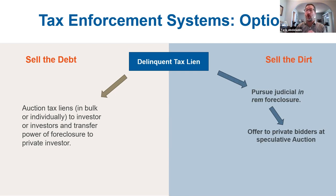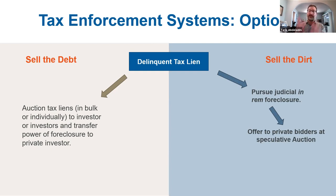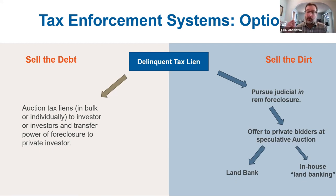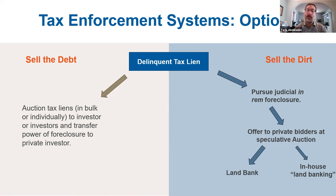The other option is for the government to hold that debt for two to three years and then pursue a judicial in rem foreclosure action through the court. They then either take title or send the property out to private bidders at a speculative auction — here they're selling the dirt, not the debt. When nobody bids on a property, it falls into the real estate division at city hall or county government, where it serves as an in-house land banking program. The other alternative is to create a land bank, so that if nothing is sold at the auction, it goes to the land bank. Land banks are also given special powers to jump ahead of all bidders and speculators at an auction. Some communities, like Syracuse and Albany in New York, have decided to eliminate the auction altogether and transfer every property over to their land bank.